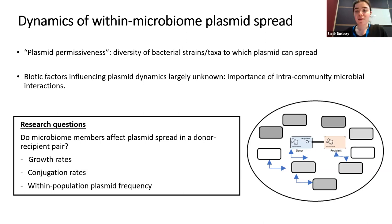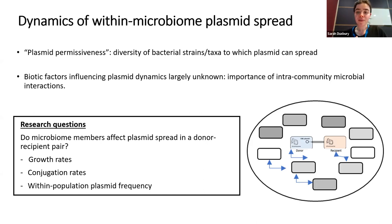While plasmid permissiveness gives one angle on spread within a community, we lack understanding of another aspect: how biotic factors within a microbiome, specifically the role of microbial interactions, influence community dynamics. For example, competitive or cooperative interactions between bacteria — how can these influence the core process of plasmid transfer and maintenance? This leads to the main research question: whether microbiome members affect plasmid spread of a focal donor-recipient pair, by examining growth rates, conjugation rates, and the resulting within-population plasmid frequency.